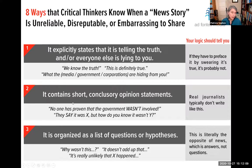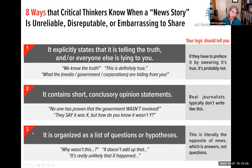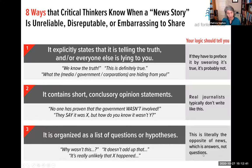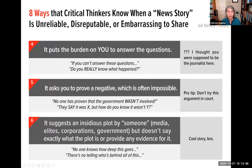Red flag two: it contains short conclusory opinion statements — 'No one has proven the government wasn't involved,' or 'They say it was X, but how do you know it wasn't Y?' Real journalists typically don't write like this. Red flag three: it is organized as a list of questions or hypotheses — 'Why wasn't this?' or 'It doesn't add up that X happened.' This is literally the opposite of news, which provides answers, not questions. Red flag four: it puts the burden on you to answer the questions — 'If you can't answer these questions, do you really know what happened?'